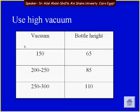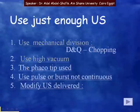The second strategy is to use high vacuum. High vacuum during the off period means that we are making use of vacuum to aspirate and flow the material into the tip and to the outside. But keep in mind that if you use high vacuum, you need to increase the bottle height.